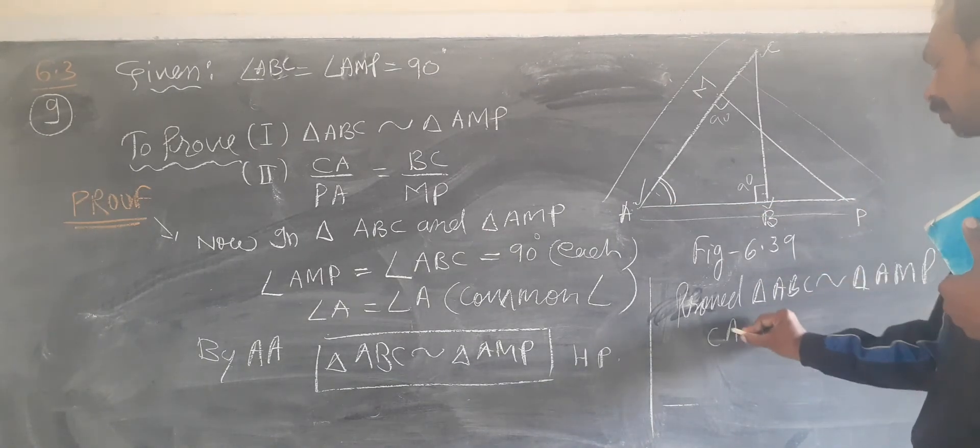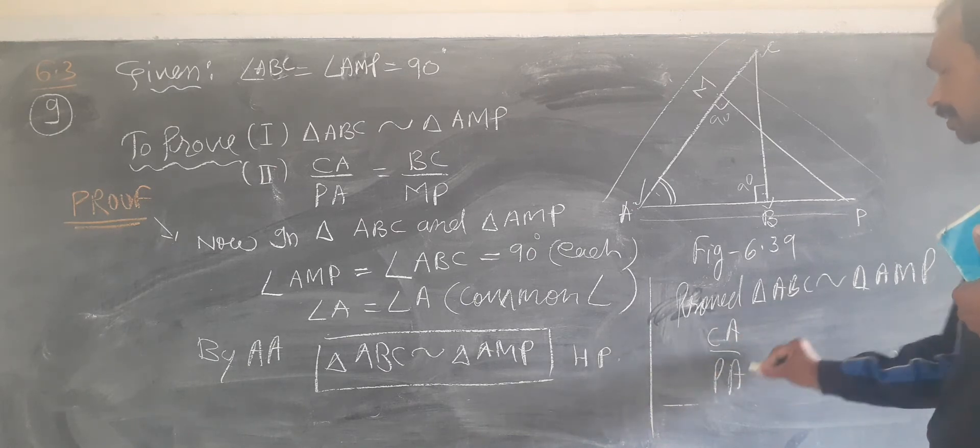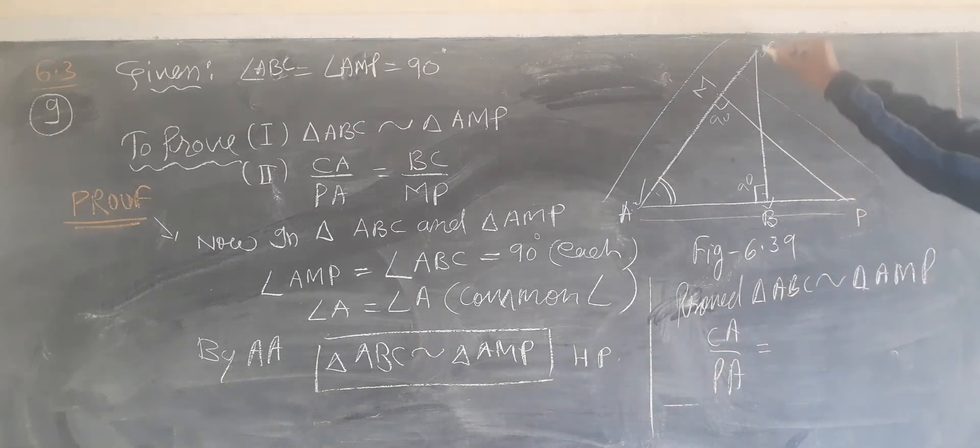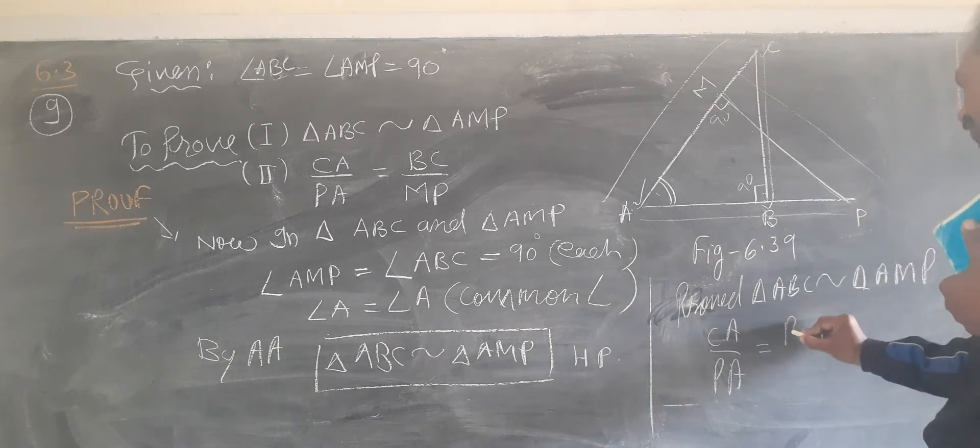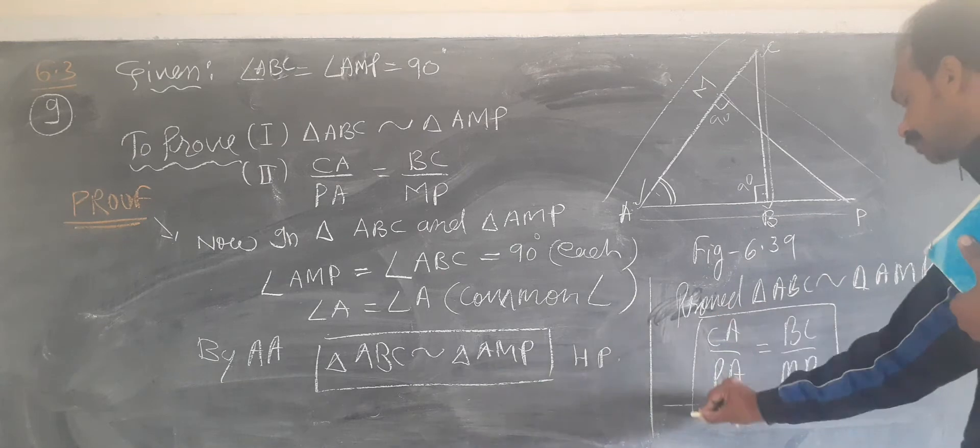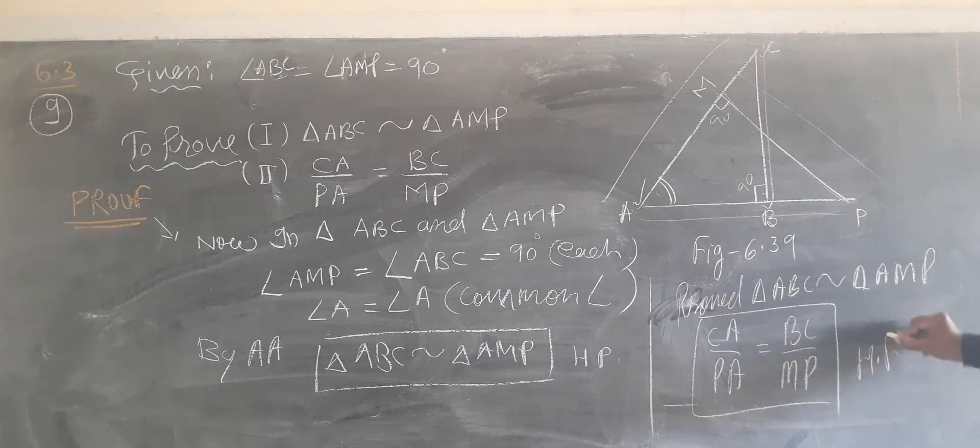Therefore, CA upon PA is equal to BC upon MP.